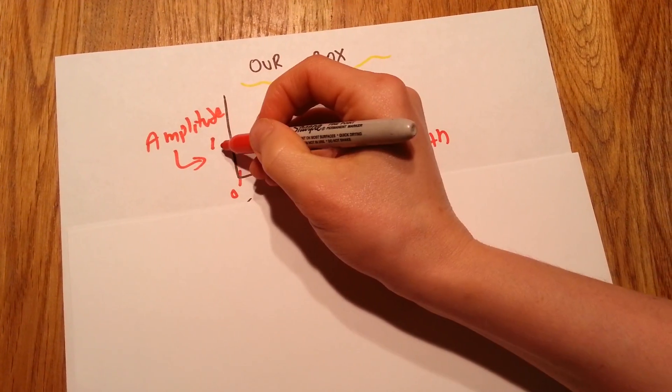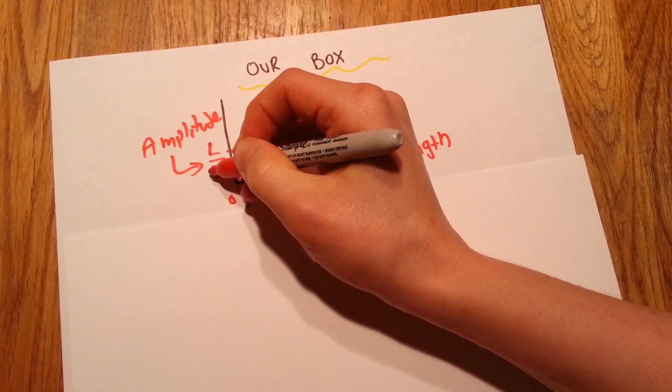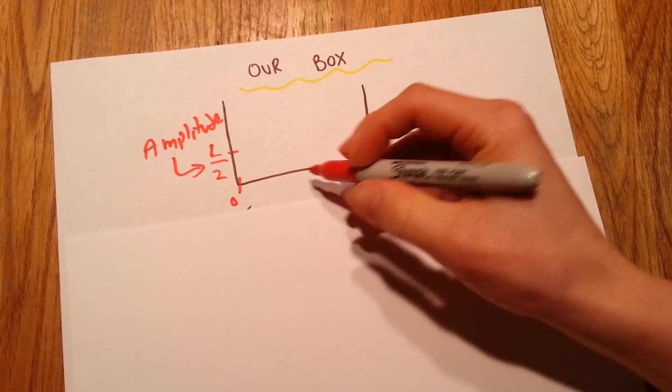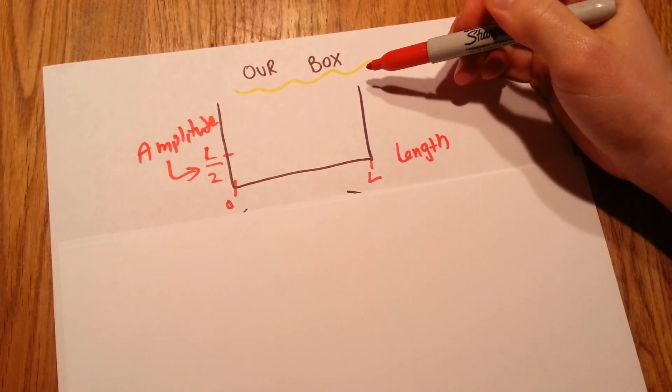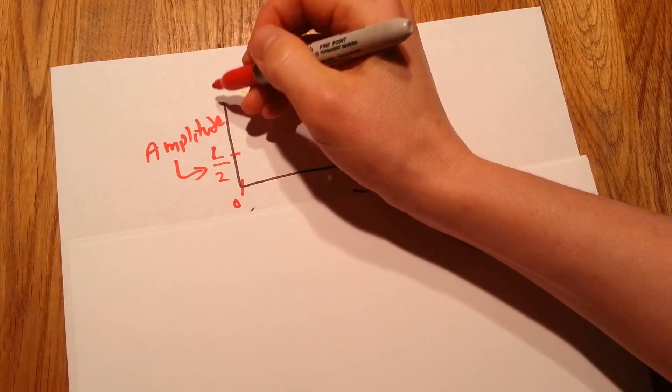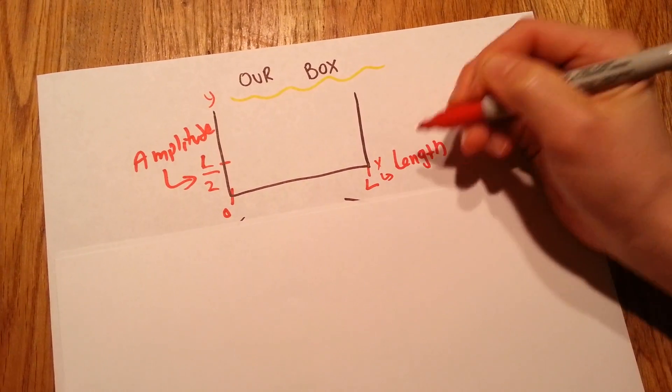Just know it's amplitude because a lot of people see, usually it's written L over 2, and they're like it's somehow related to the problem. It's not. Just know that the y-axis is the amplitude and the x-axis is the length.